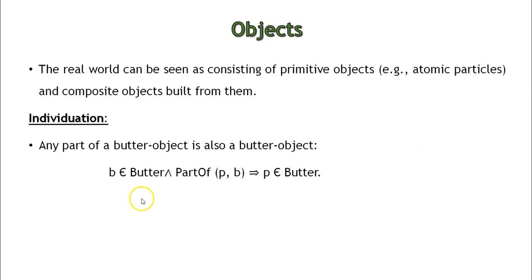The expression is written as: if the variable B belongs to the category Butter and PartOf is a predicate, we read it as variable P is a part of B, where B is already defined as butter.